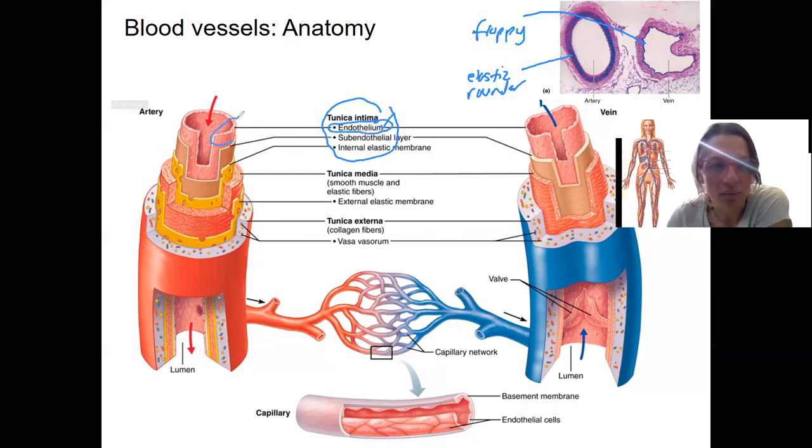There is this tunica intima, mostly endothelium, and with capillaries, that's all there is. I'm going to circle this one. That's what we're going to talk about it as this layer right here. So capillary would just be that layer. Same thing with the vein.